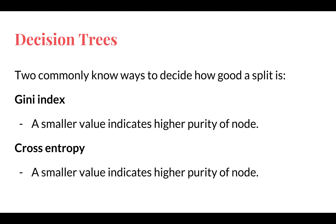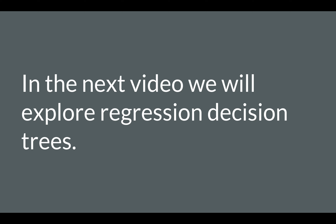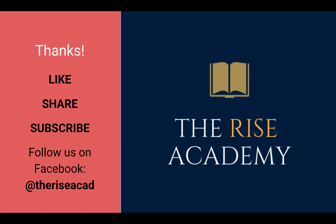In the next video, we will look at an example of a regression decision tree and a classification decision tree in a bit more detail, and then we will look at the formula for Gini index and how it is calculated with the help of some examples. In this video I just wanted to give you a little bit of intuition about decision trees. I hope you were able to understand that — thank you so much for watching.